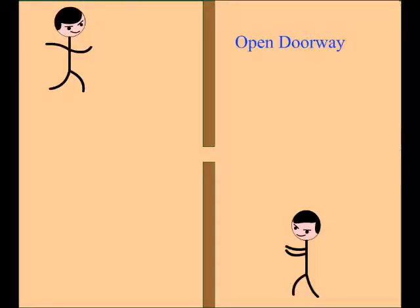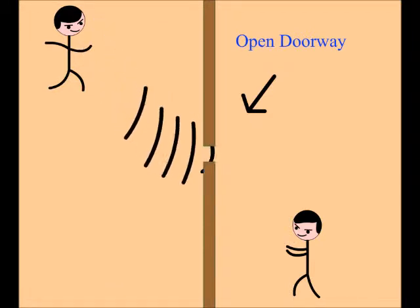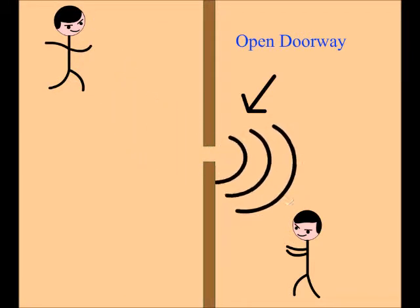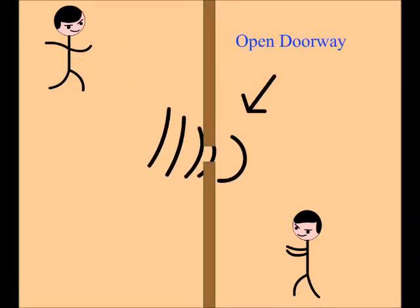Have you ever wondered why we can hear a person talking from another room with an open doorway? This occurs because of diffraction. Waves have a potential to bend around corners and any obstacles that come in their way. That is why we can hear someone in the other room when the door is open.